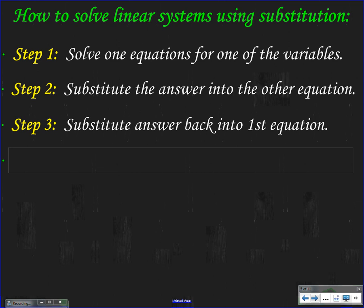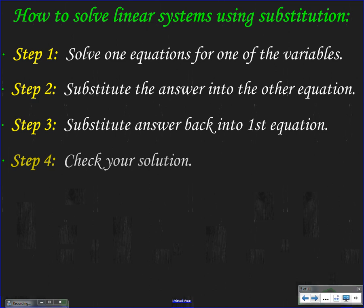We're going to have two equations, so I'm going to substitute the answer back into my first equation. Step four: check my solution. That's it — very simple. To reiterate: solve one equation for one of the variables, take that and substitute it into the other equation, and then when I get an answer, substitute that one back into my first equation.